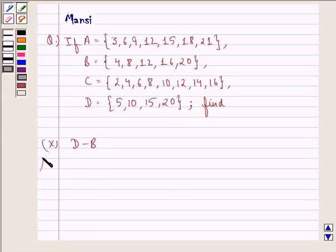Let us see the solution to this one. We see that D minus B is the set {5, 10, 15}.